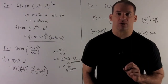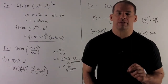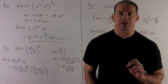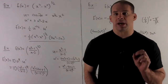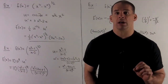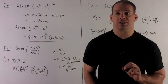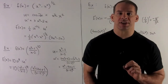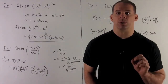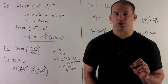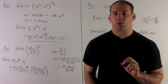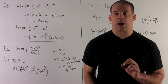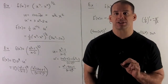Let's do some examples for the chain rule. For my first one, let's consider f of x equal to x cubed minus x squared, quantity raised to the one-half power. Our inside is going to be u equal to x cubed minus x squared, and u prime is going to be 3x squared minus 2x.